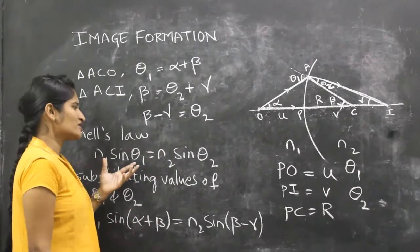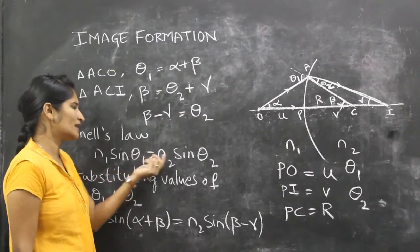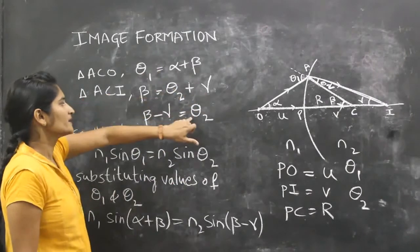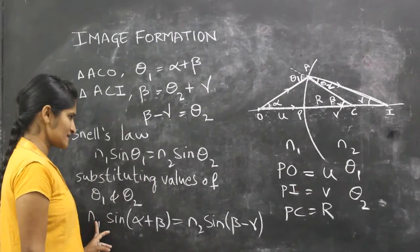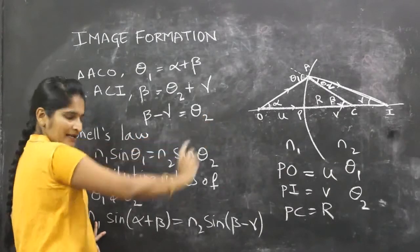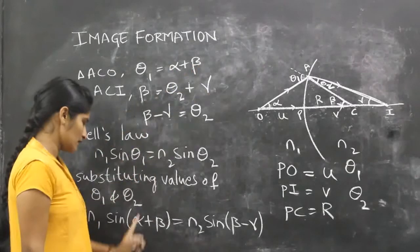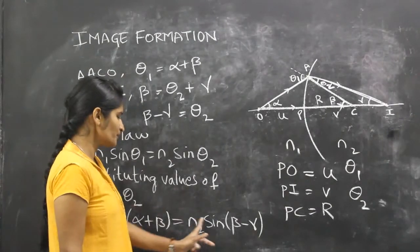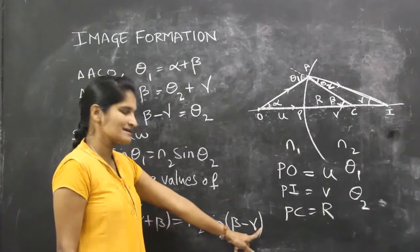For refraction we follow Snell's law: N1 sine theta 1 equals N2 sine theta 2. Substituting the values of theta 1 and theta 2: N1 sine(alpha plus beta) equals N2 sine(beta minus gamma).